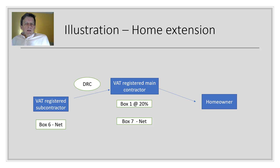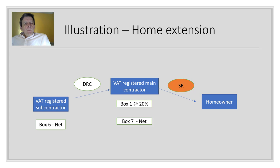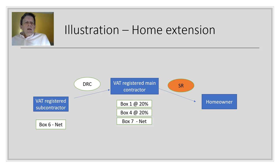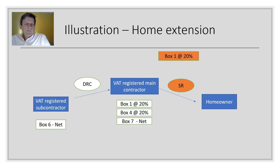When the VAT-registered main contractor supplies the homeowner, they provide extension services which are taxable at the 20% standard rate. Because the main contractor is making an onward taxable supply, they have the ability to recover the VAT on the domestic reverse charge in box four — so for the main contractor it's straight in and out. They then deal with their sale to the homeowner: box one for the VAT they charge, and box six for the sale.